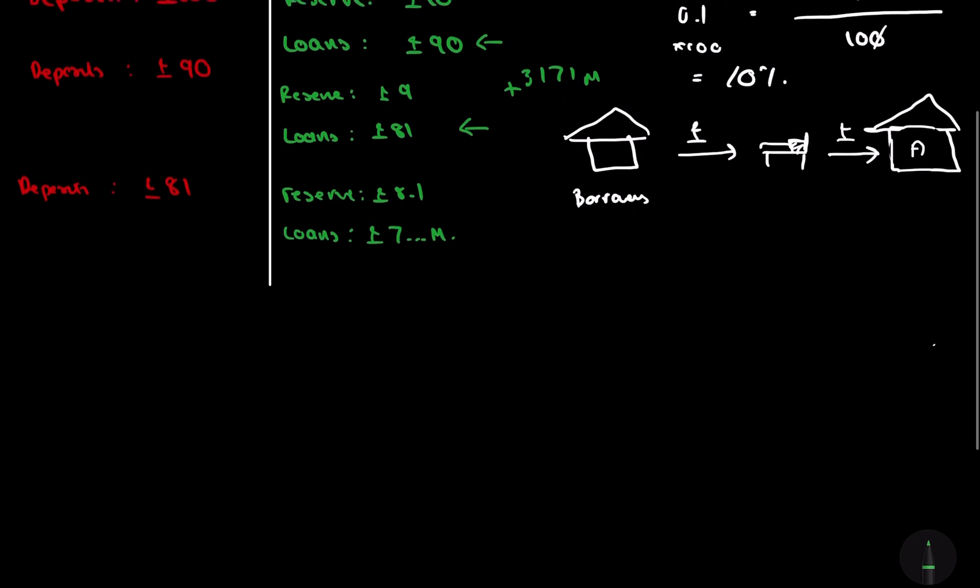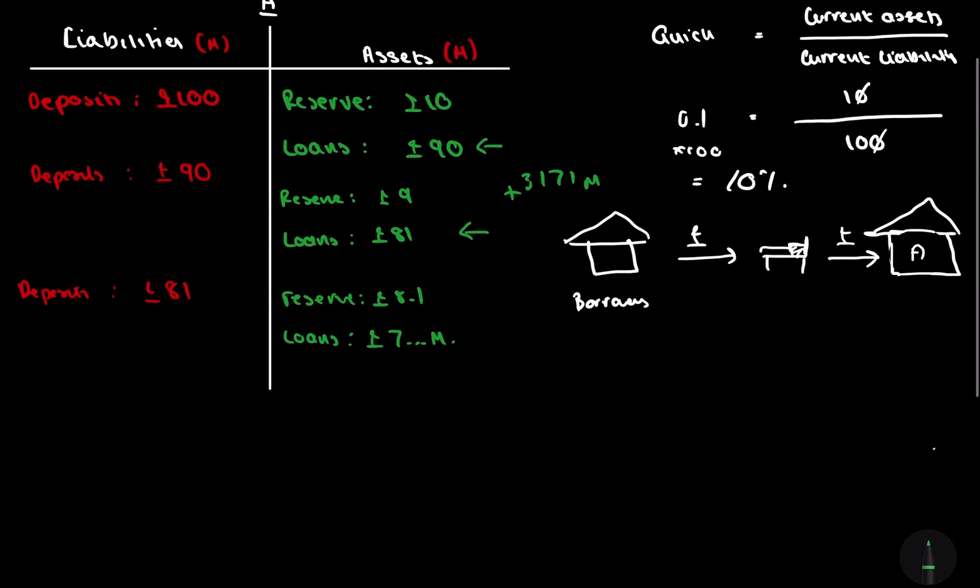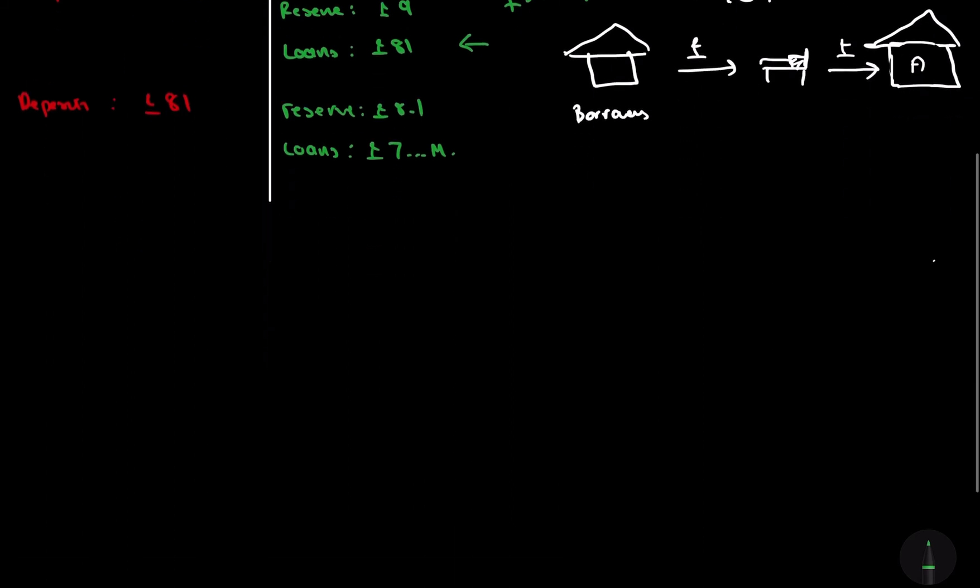So, you're probably thinking now, when does this process stop? And how much money does an injection of 100 million actually create in credit for the economy? And there's an equation for this. We call this the bank multiplier. The bank multiplier. And this is calculated as essentially the inverse liquidity ratio. So, 1 over L. L, obviously meaning the liquidity ratio or the quick ratio.